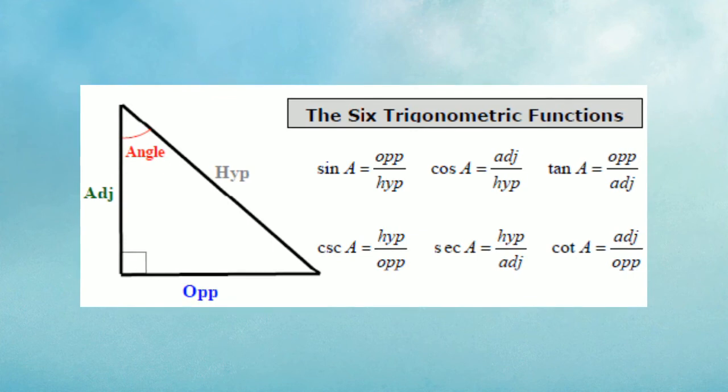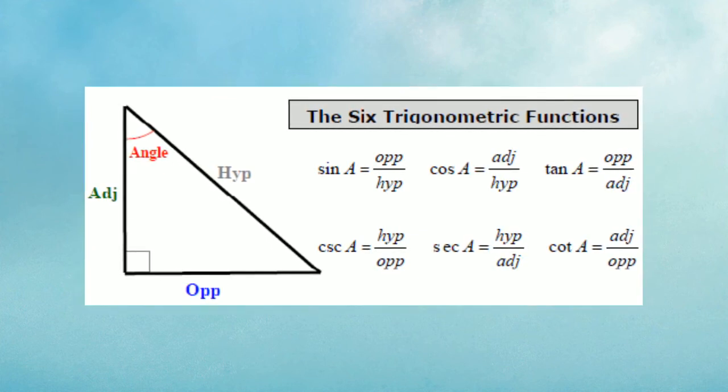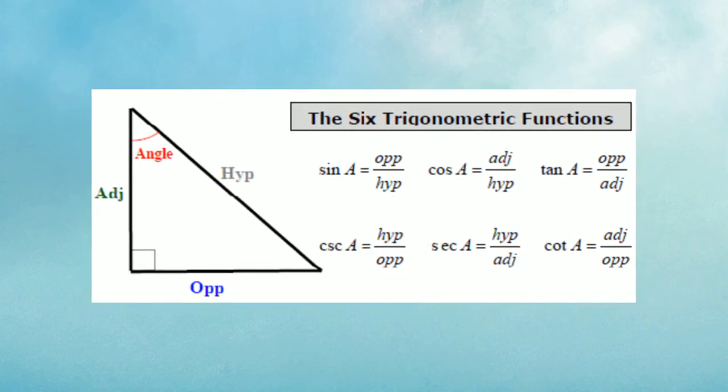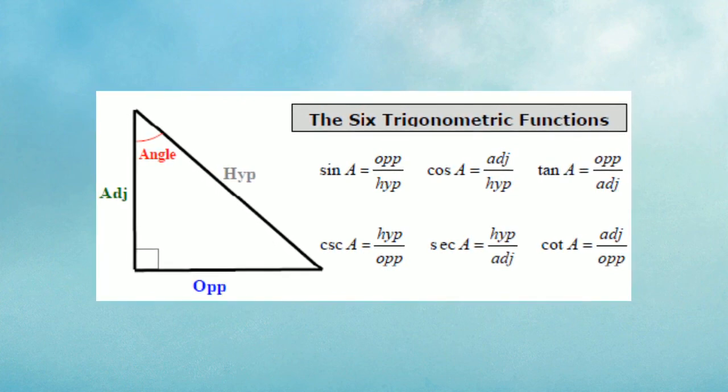Cotangent is the reciprocal of tangent, so it's adjacent over opposite. This is all in relative to angle A.